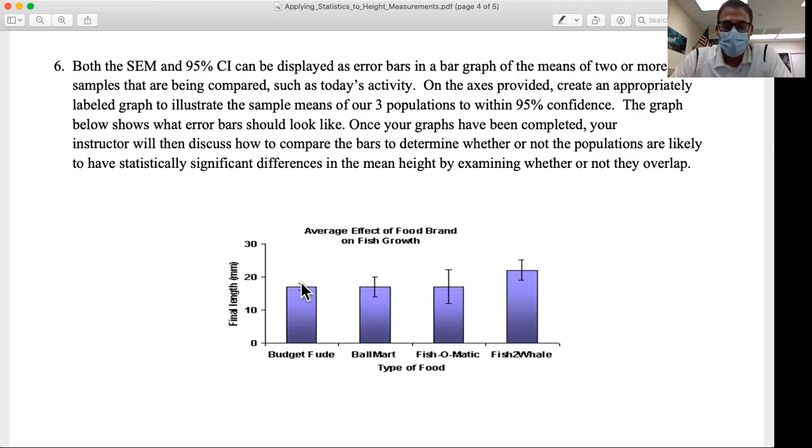What I want to do is compare the 95% confidence interval bars that I have on each of my graphs. If the 95% confidence intervals overlap, like we see with budget food and Ballmart, or Ballmart and Fish-o-matic, or Fish-o-matic and Fish-to-Whale,